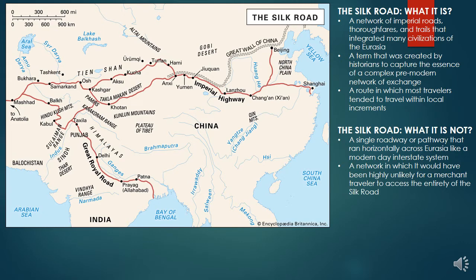The Silk Road was a network of pre-modern imperial roads, thoroughfares, and trails that integrated many civilizations of the Eurasian landmass. In pre-modern times, no merchant, missionary, diplomat, soldier, nor emperor would have referred to this network as the Silk Road, as the term is really a historiographical term created by historians to capture the essence of this complex, pre-modern network of exchange.